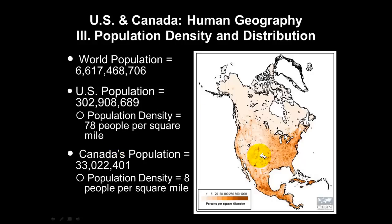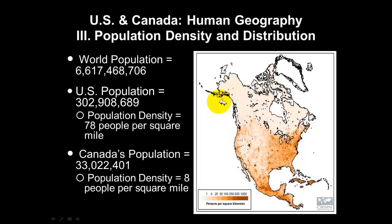Let's take a look at this map to the right — this is a population density map of Canada. Notice Northern Canada: not a lot of people there at all. Northern Canada is very close to the North Pole and also very close to Alaska.